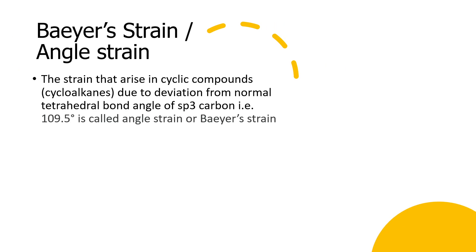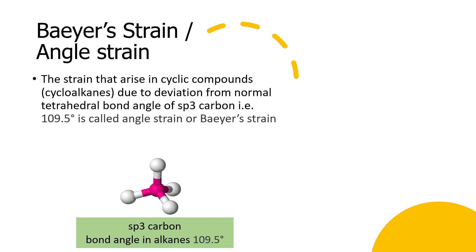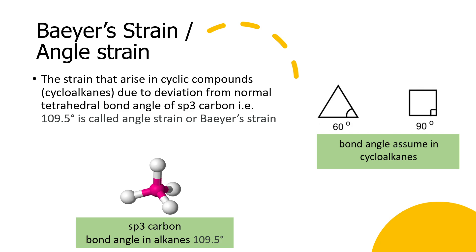The last type of strain is Baeyer strain or angle strain. The strain that arises in cyclic compounds due to deviation from the normal tetrahedral bond angle is called Baeyer strain or angle strain. In a normal sp3 carbon, the bond angle is 109.5 degrees. When the carbon-carbon bond angle is near 109 degrees, the molecule is at ease. But in cyclic compounds such as cyclopropane or cyclobutane, the molecule must attain different bond angles — 60 degrees in cyclopropane and 90 degrees in cyclobutane. This imposes strain in the molecule, called angle strain.